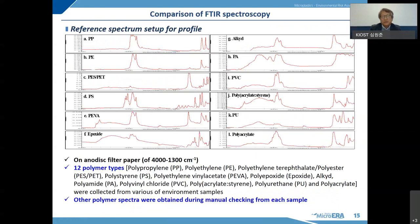This slide shows reference spectra for 12 common polymers found in environmental samples. The reference spectra were obtained from various environmental samples. There is one very important note: although we only targeted 12 polymers initially, during the manual checking process after profiling we could detect additional polymers. It means when we run the profiling for polypropylene or polyethylene, other polymers are also detected. So in the manual checking process, we identify new polymers and run the profiling again with them. That's why generally the number of reported polymer types is always over 12.